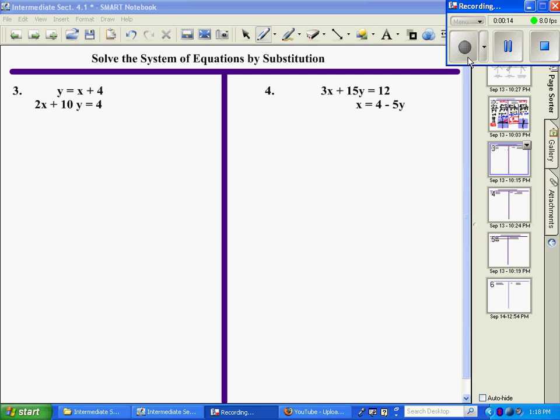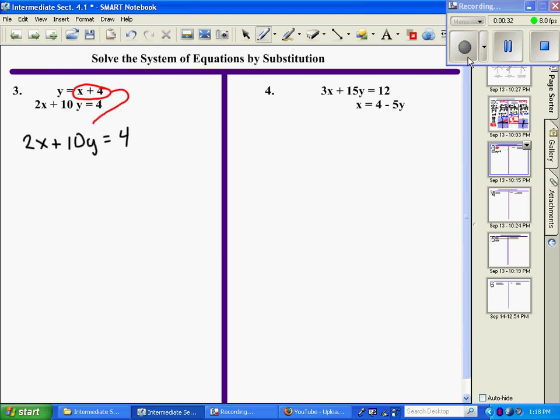I'm going to look at number 3. Since my first equation already has a variable solved for it, a y equals, I'm going to write my second equation: 2x plus 10y equals 4. And in place, since I know y equals this value, I'm going to substitute it for y in that position right there.